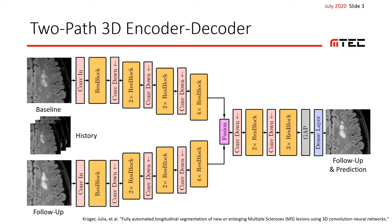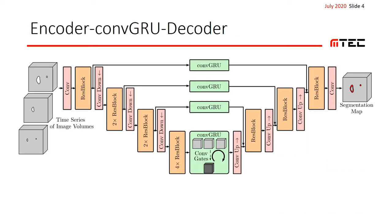An easy approach would be to just add more encoder paths for the additional volumes. We came up with a more elegant solution. We propose an encoder convolutional gated recurrent unit decoder architecture to deal with this kind of segmentation problem. We use an encoder with 3D convolutional layers that processes all volumes in parallel, similar to the previously shown architecture. Then, at the decoder, we employ convolutional gated recurrent units to perform temporal aggregation across all time points. We apply this strategy across multiple scales with U-Net long-range connections.